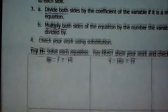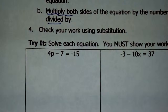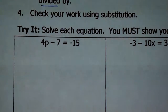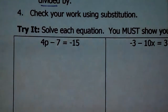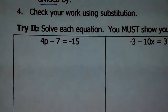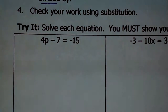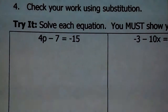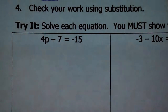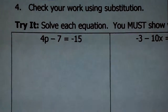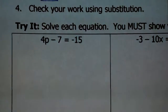Let's try a few of these. Not one of these examples is the same — I need you to understand that the variable can be on any side, and to keep in mind keep-change-change, order of the terms, and all that. So our first equation: I have 4p minus 7 equals negative 15. And yes, you do have to show your work — you cannot just write down a bunch of answers.